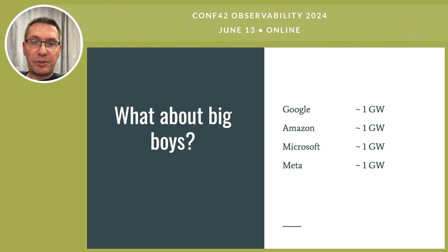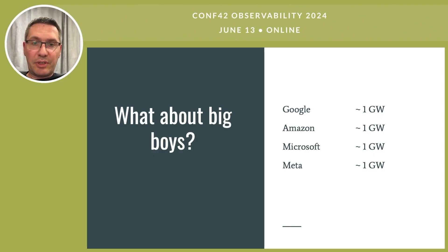And what about XXL size? When we speak about hyperscalers such as Amazon, Google, Meta, and so on, their data center capacity reaches a gigawatt. To give an idea of how big this number is: in 2023, all data centers combined consumed around 8 gigawatts of power, so you can see that roughly half of this amount is consumed by the hyperscalers alone.